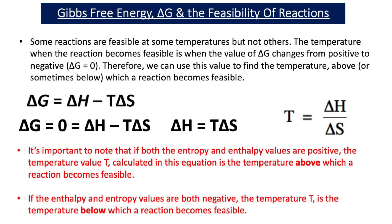You will only ever use T equals delta H over delta S when either both the enthalpy and entropy values are positive, or both are negative. When they're not both positive or both negative, you won't need to work out a temperature for feasibility, because the reaction will either be feasible at all temperatures or not feasible at all. If you have a negative delta H value and a positive delta S value, the reaction is always feasible. If both are negative with a positive delta H, the reaction is never feasible at any temperature.